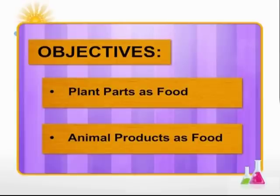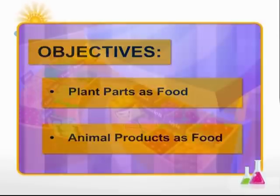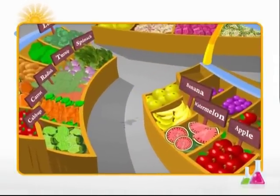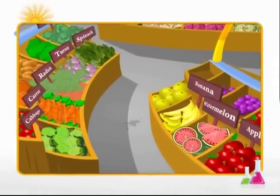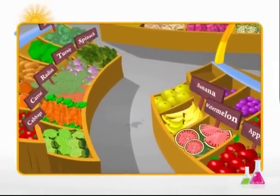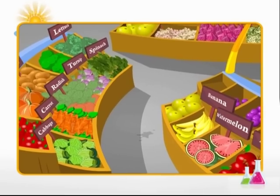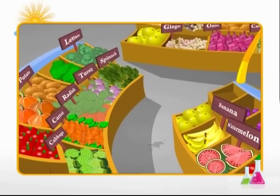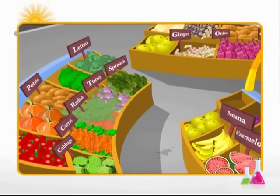In this module, you will learn about plant parts and animal products that are used as food. We eat different parts of a plant as food. Sometimes we eat the leaves of a plant, sometimes fruits, roots, stems, and sometimes even flowers.